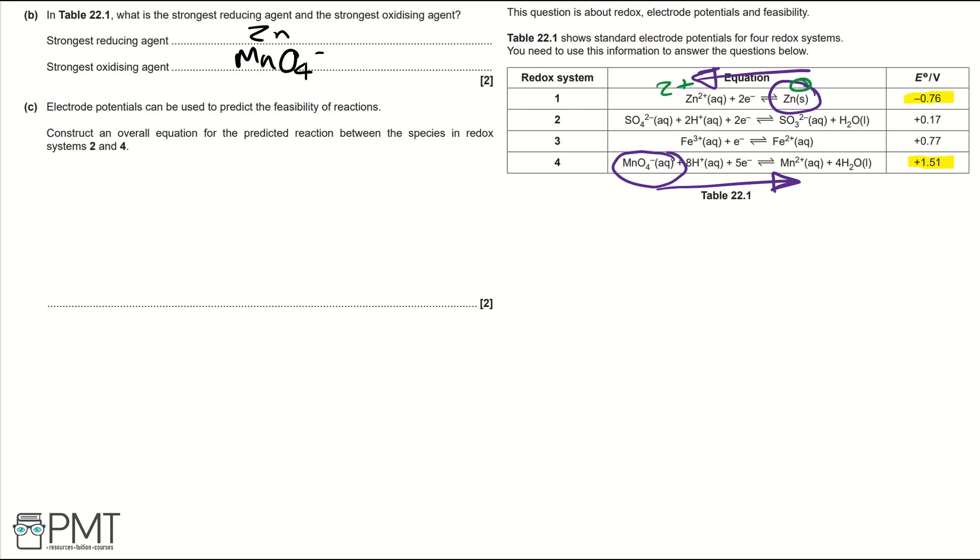Part C. Electrode potentials can be used to predict the feasibility of reactions. Construct an overall equation for the predicted reaction between the species in redox systems 2 and 4. So focusing on redox systems 2 and 4, we can rewrite these equations and that will help us to construct an overall equation.